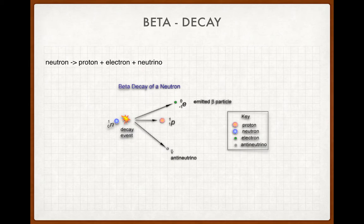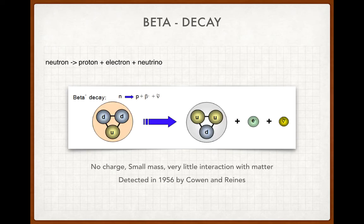Now here's another way of looking at beta decay. So a couple of things there, if we look at the text at the end first. The neutrino has no charge, small mass, and interacts very little with matter. It was so difficult to detect because it doesn't interact with matter that it wasn't until 1956 that the two guys, Cowan and Reines, detected the neutrino. And I think they won the Nobel Prize in physics for that as well.